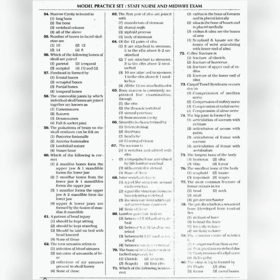Question 55: Number of bones in the facial skeleton are — the answer is option 2: 14. Question 56: Which of the following bones of the skull are paired — the answer is option 4: 1 and 2, that is parietal and temporal. Question 57: Forehead is formed by — the answer is option 1: Frontal bone.